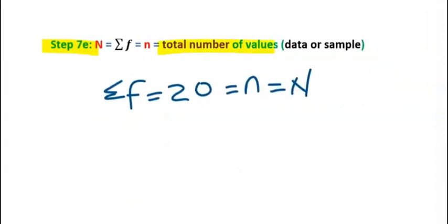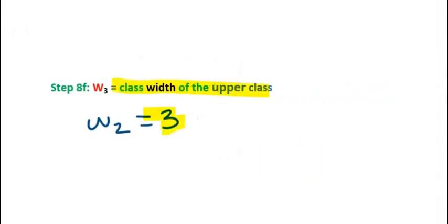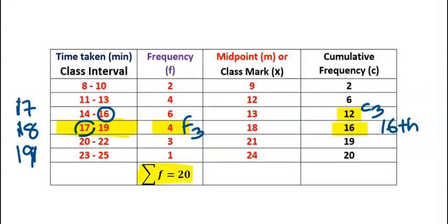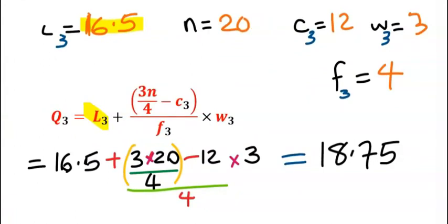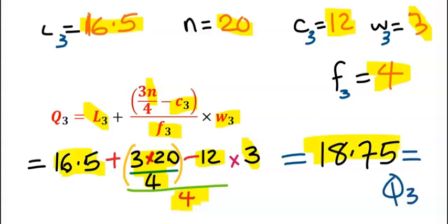Now that we have F3, the total number of samples N is still 20, and the class width remains 3. Substituting into the upper quartile formula: for L3 put 16.5, for N put 20, for F3 substitute 4, for C3 substitute 12, and for W substitute 3. Solve 3N over 4 first, subtract C3, divide by F3, multiply by 3, then add to 16.5. The upper quartile becomes 18.75.